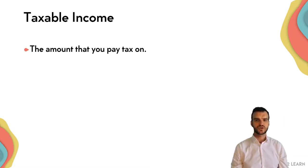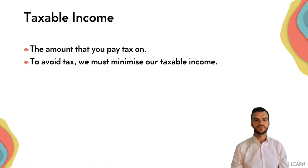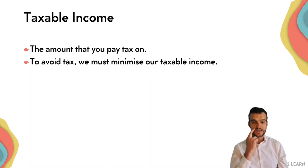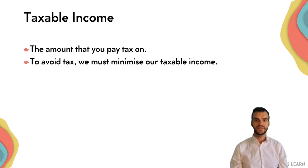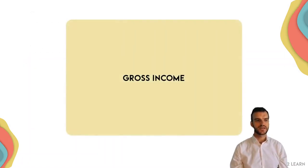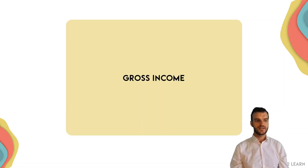This is an important concept because ultimately taxable income is the amount that you must pay tax on, and to avoid tax we must minimize our taxable income. So we need to know exactly how one minimizes it by knowing what it is made up of. So don't get too concerned if you aren't familiar with these terms — we'll get into them later in the course.